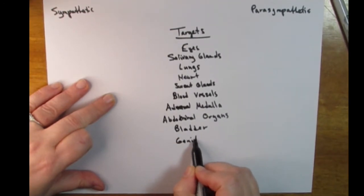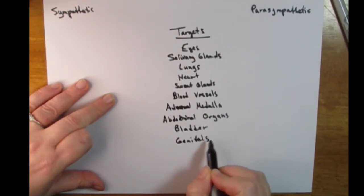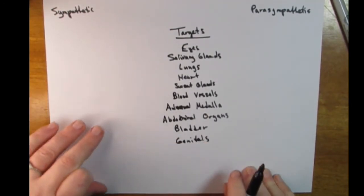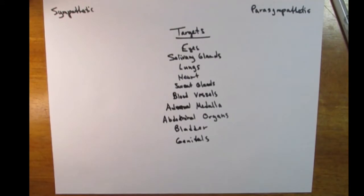There are only two things that an effector will do: it either has a muscle contraction or it has a glandular secretion.